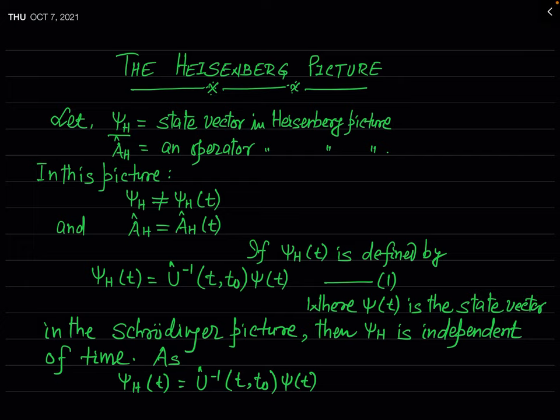But in the Heisenberg picture, the state function of the system is independent of time while the operator corresponding to an observable is time dependent. For convenience, the state vector is denoted by ψ_H and the operator by Â_H, where the subscript H denotes the Heisenberg picture. So ψ_H is independent of time, but Â_H is time dependent, written as Â_H(t).